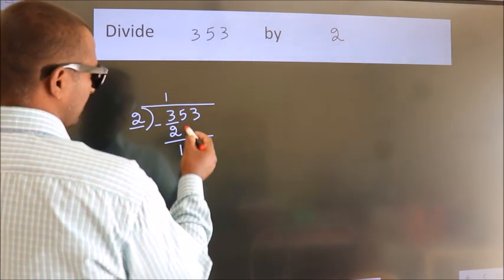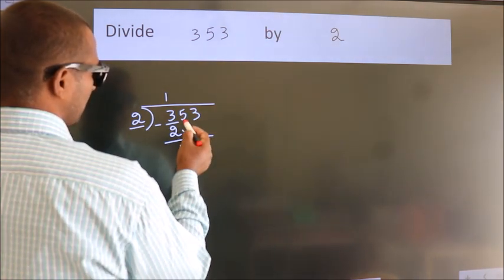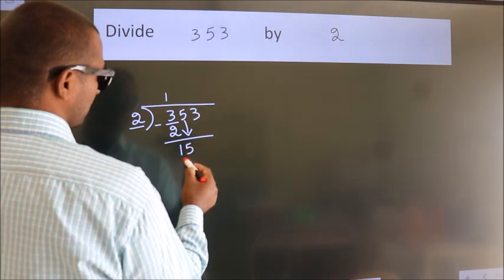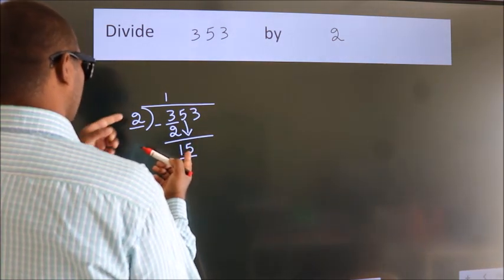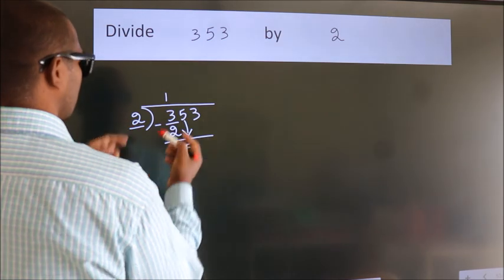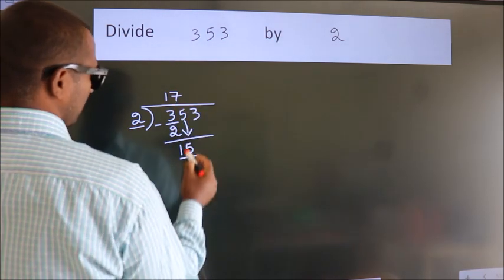After this, bring down the beside number. So, 5 down, giving us 15. A number close to 15 in the 2 table is 2 sevens 14.